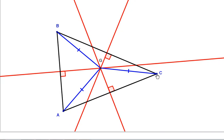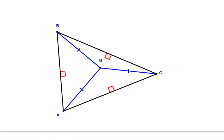What this also means is that since G is equidistant from the vertices, I want you to take a moment and think about the nature of a circle.